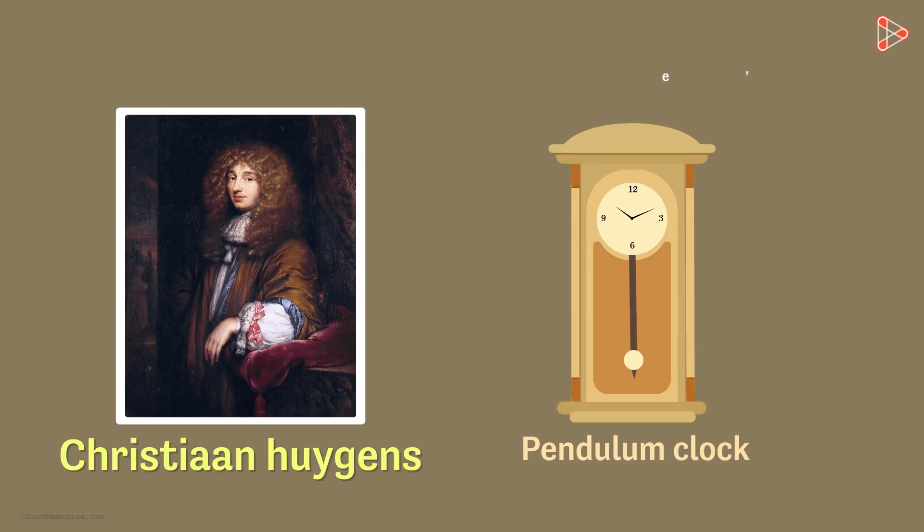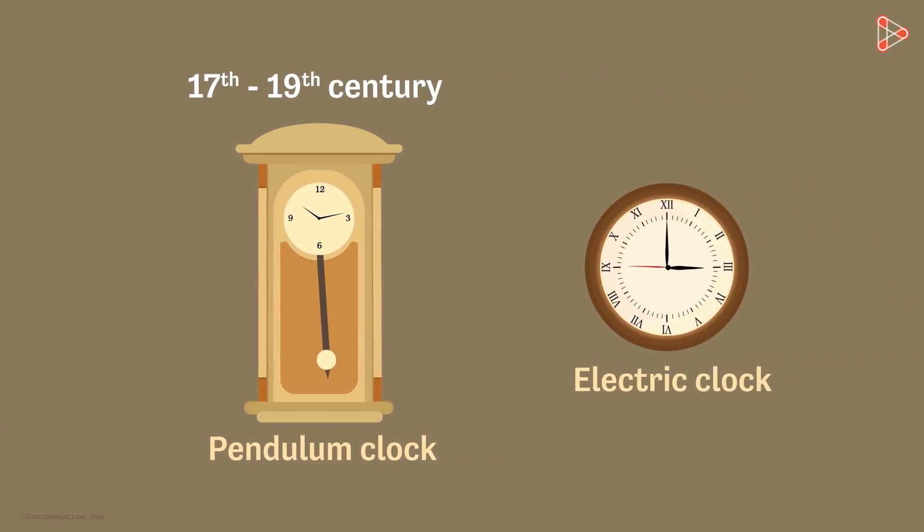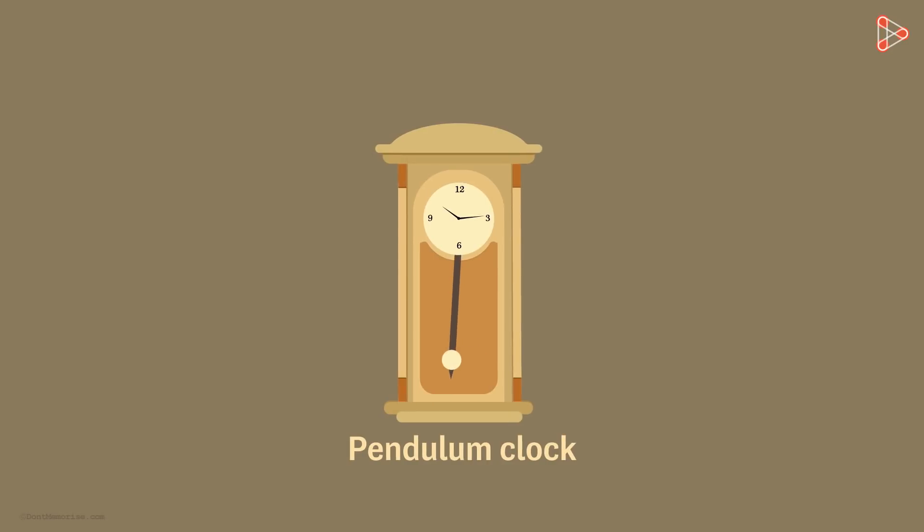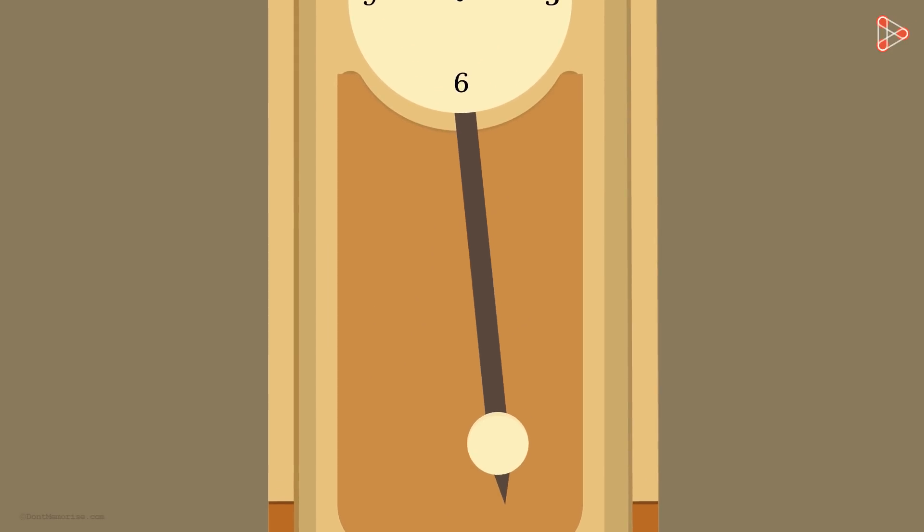Pendulum clocks were very popular from the 17th century, when it was first made, to the 1930s, when they were later replaced by electric clocks. The reason this clock is called so, is because it has a pendulum as its part.